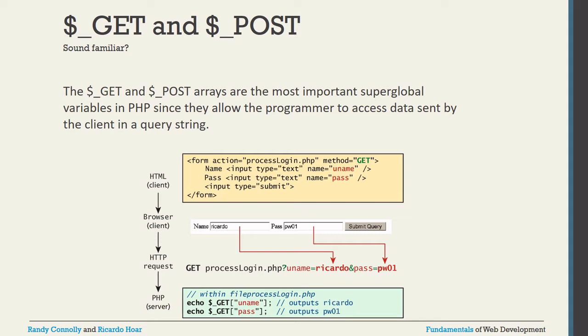How do you pass the value? By the name attribute. So name equal to 'uname' and name equal to 'pass'. Then with $_GET['uname'] and $_GET['pass'] we get whatever value the user types in the input box. For example, if the first input box has value 'Ricardo', that becomes the username, and 'PW01' becomes the password.